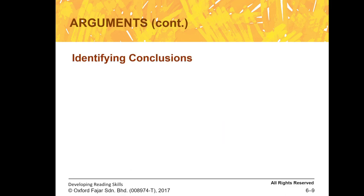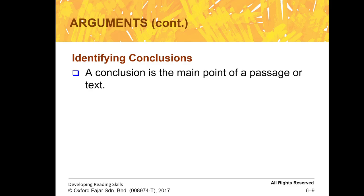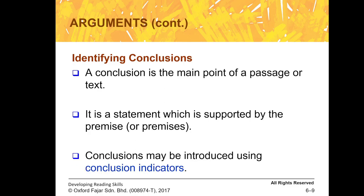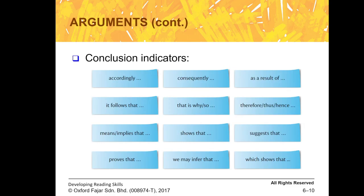A conclusion is the main point of a passage or text. It is a statement supported by one or more premises. Each passage will always have one conclusion and will be made up of one or several premises. Conclusion indicators include: 'accordingly,' 'it follows that,' 'means,' 'implies that,' 'proves that,' 'we may infer that,' 'shows that,' 'that is why,' 'so,' 'consequently,' 'as a result,' 'therefore,' 'thus,' 'hence,' 'suggest that,' and 'which shows that.'